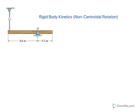Hello again. I want to show you a problem related to rigid body kinetics, and I want to use the so-called modified second law. This is a problem where the motion is about a point which is not the centroid of the body.